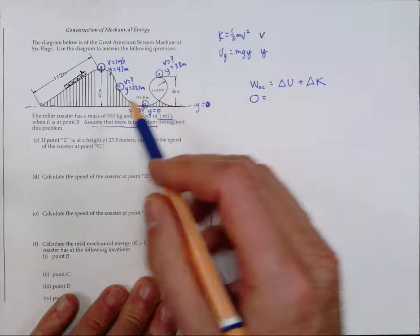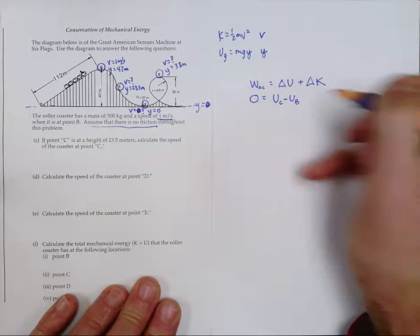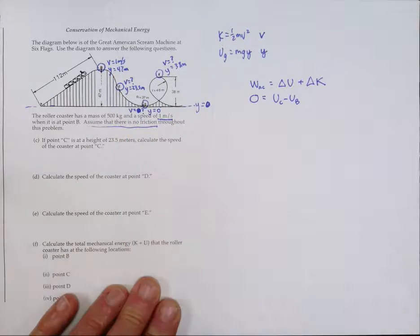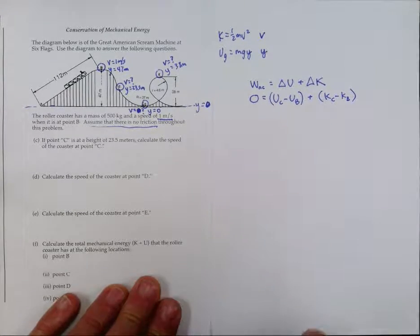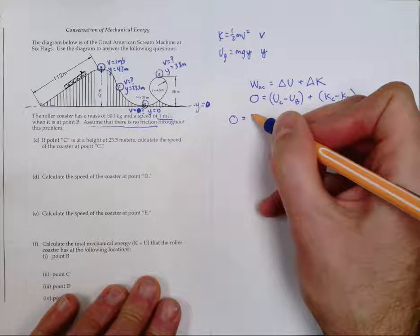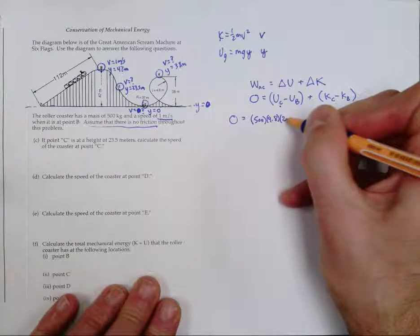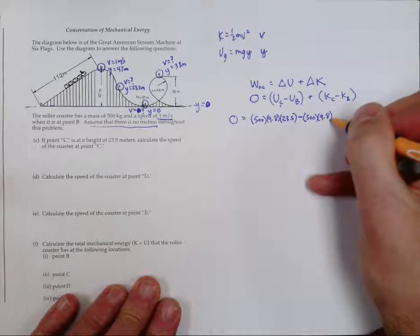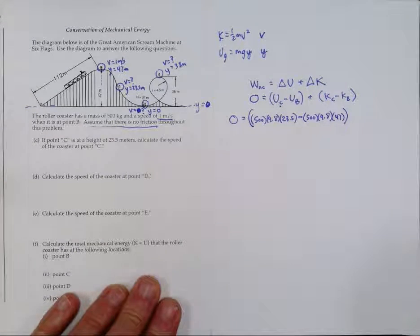Since WNC is zero, we have: zero equals (potential at C minus potential at B) plus (kinetic at C minus kinetic at B). We compare to B because we know everything there. Substituting: potential at C is 500 × 9.8 × 23.5, minus 500 × 9.8 × 47. For kinetic: one-half × 500 × vC² minus one-half × 500 × 1². Notice every term has 500 in it, so the mass cancels out — we didn't even need to know the mass.